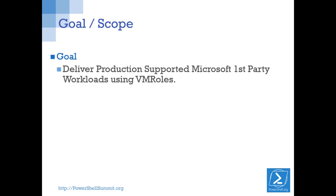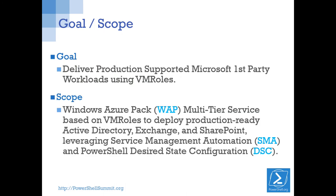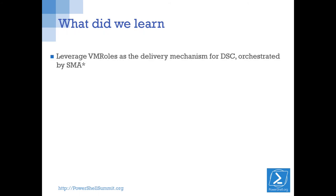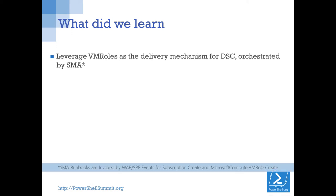Our mission was to deliver a supported way of doing this, and the scope was to do it on WAP. We very quickly identified SMA and DSC as the technologies we should be focused on to solve this problem. VM roles were the delivery mechanism. Everything we could automate using DSC on the inside of the VM role — that's how we ended up doing it. In some cases we even took functionality the VM role would have provided, like joining a domain, and shifted that over into DSC for consistency. We wanted something portable — you could take the knowledge gained building these configurations and move it to Azure or future versions of WAP. SMA started taking on more and more duties as we continued prototyping more advanced scenarios.